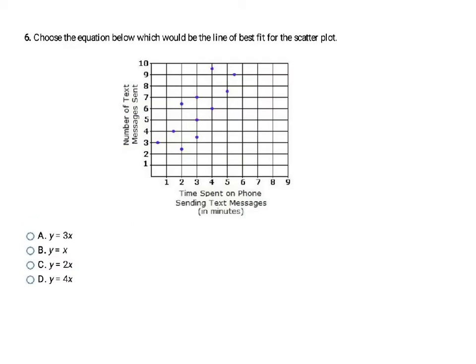Okay, this problem gives us all the data points on a scatterplot and wants us to draw a line of best fit. Remember, a line of best fit isn't connecting the dots — it's taking the average of the dots. It's drawing the straightest line where you have about the same amount of data points on the top of the line as on the bottom. So I went ahead and sketched it, and I'm just going to check which equation is closest to my orange sketch.